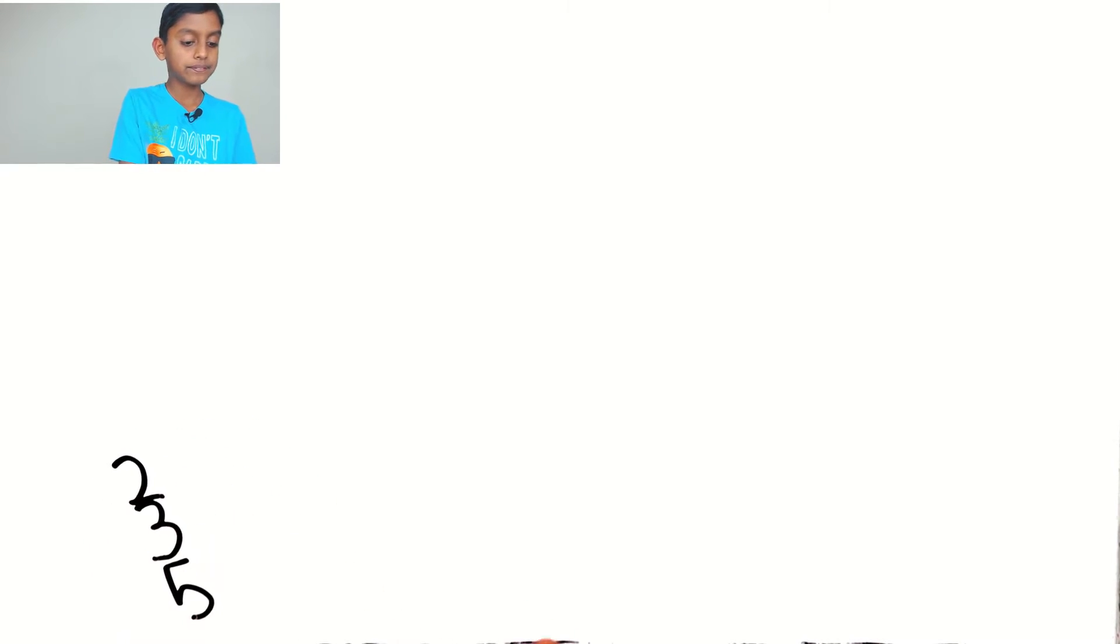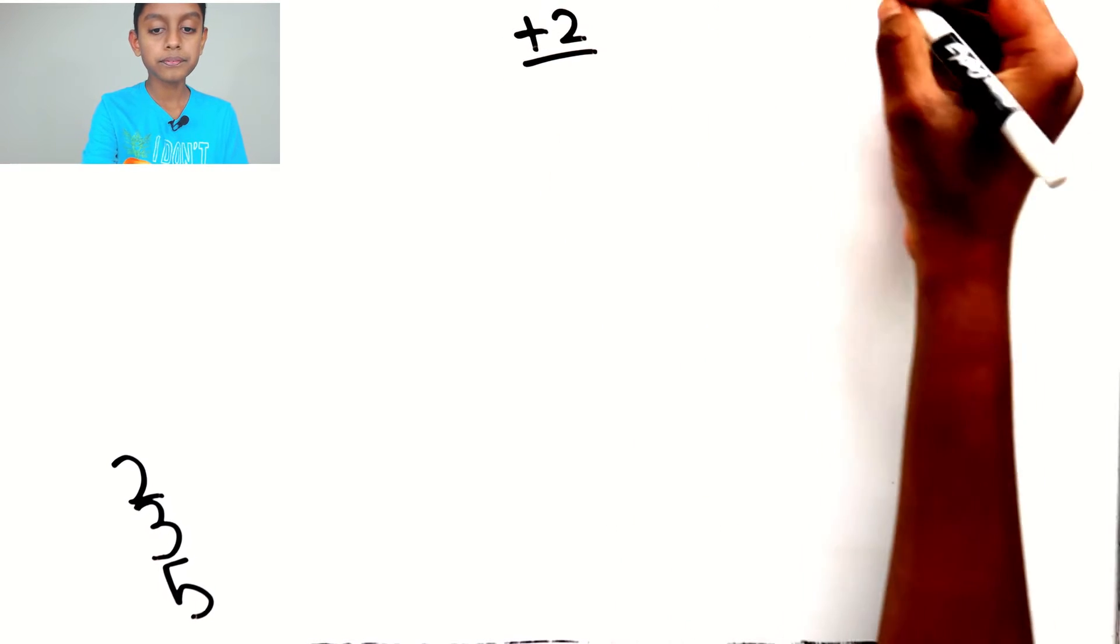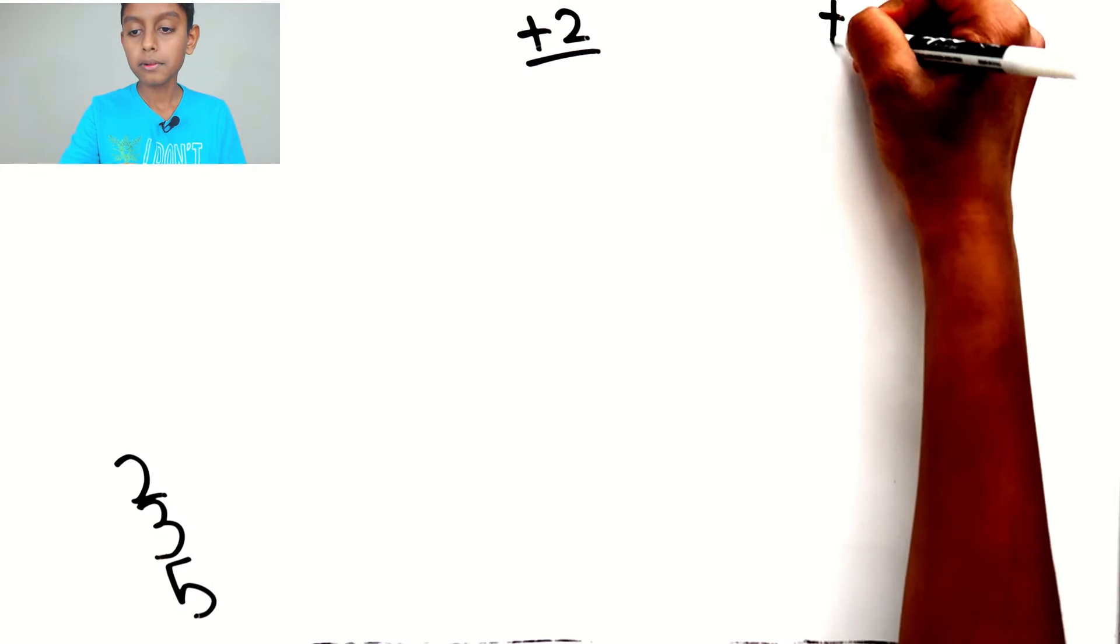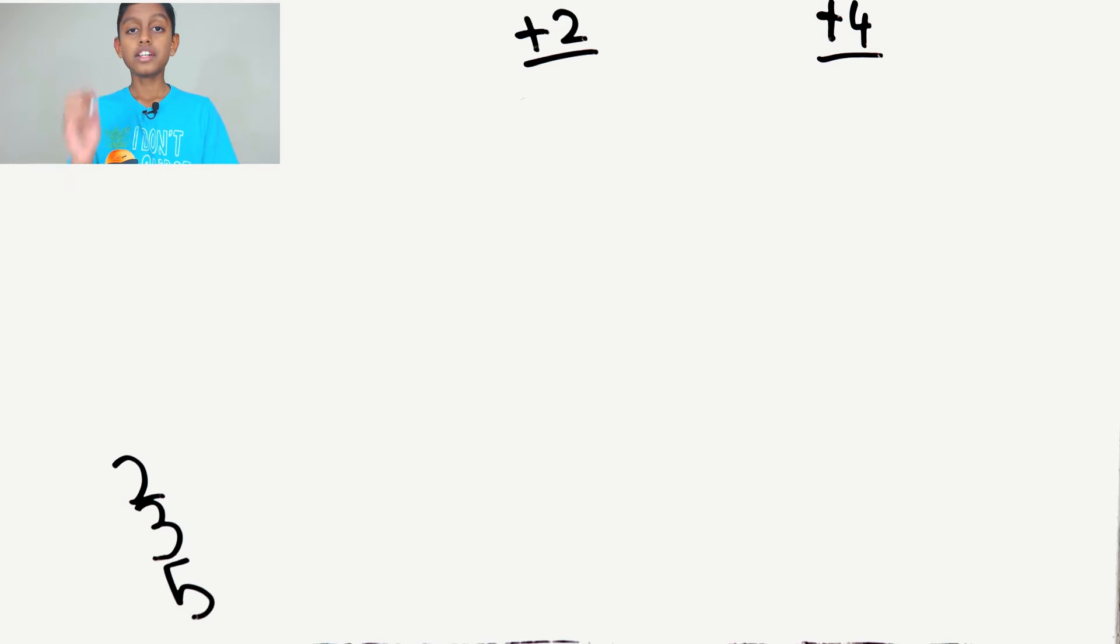The trick is, we need to first list the first 3 prime numbers which is 2, 3, and 5. Now, we put plus 2 and plus 4.